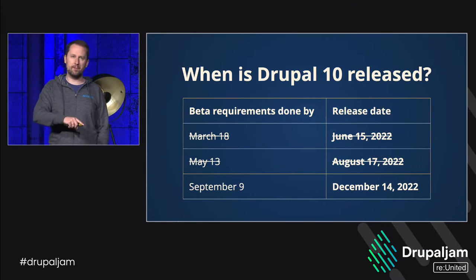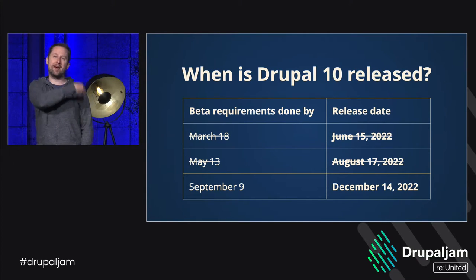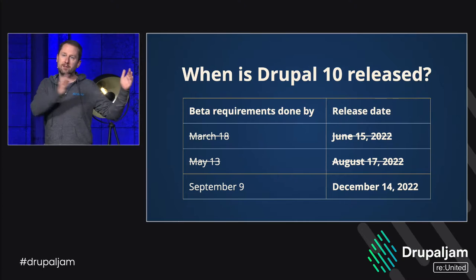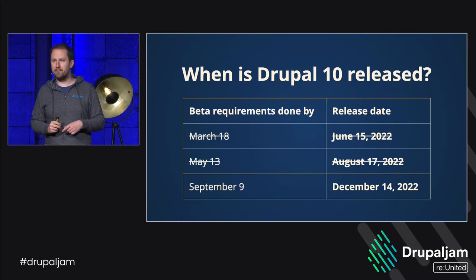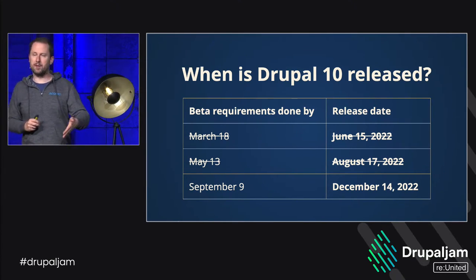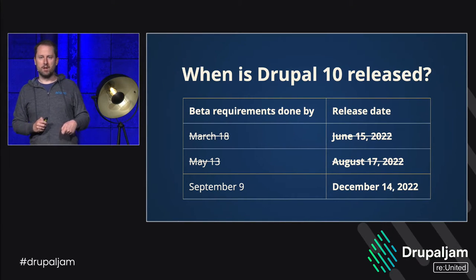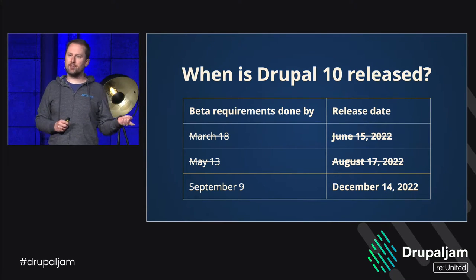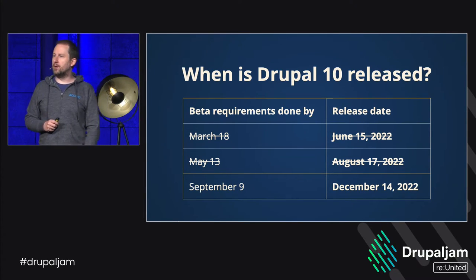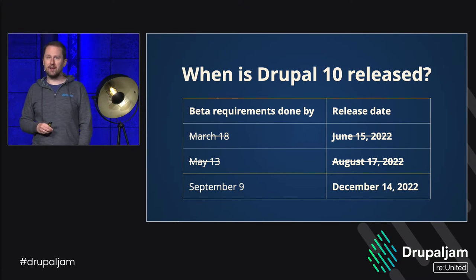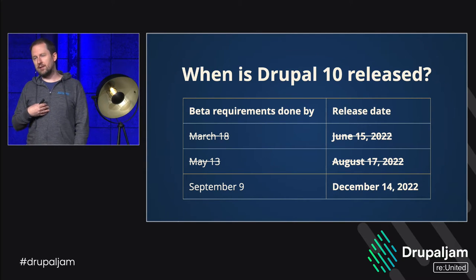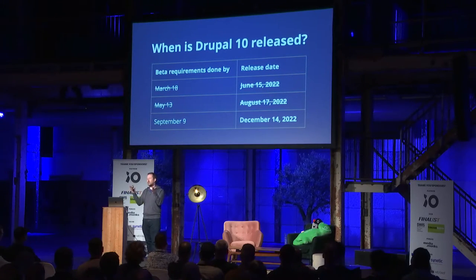Drupal 10 will be based on Symfony 6. We pre-announced three possible release dates: if done by mid-March, release in two weeks; if done by mid-May, release in August. We were not done by mid-May, so we now target completing everything by September 9th, with a mid-December release. If we're not done by September 9th, we'll start adjusting the roadmap and look at what features can be postponed from Drupal 10.